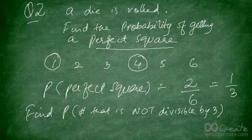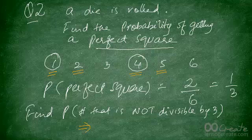So the numbers not divisible by 3: 1 is not divisible by 3, 2 is not divisible by 3, 4 isn't, and neither is 5. So there are four numbers that are not divisible by 3. The answer to this question is going to be 4 out of 6, which is equal to 2 out of 3.